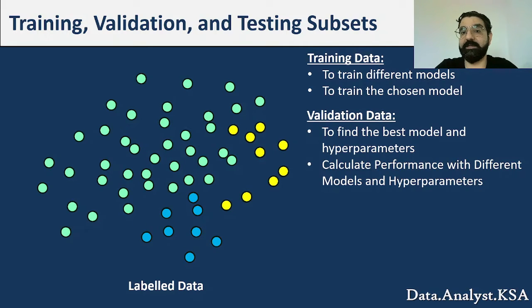Also, for example, if I'm trying a K-NN model with K equal 1, K equal 2, or K equal 10, I'm going to test the performance of all these trained models with the validation data. Then based on the best performance metric I get with my validation data, I'm going to choose my hyperparameter K, for example in this case.